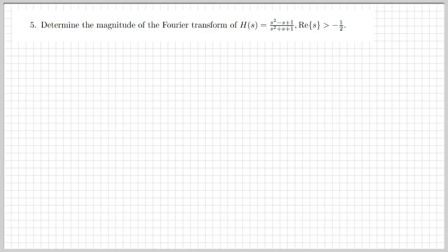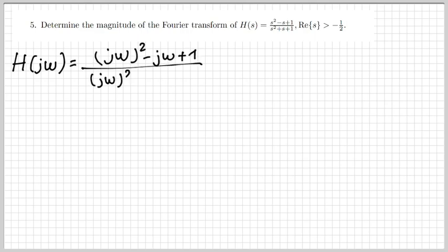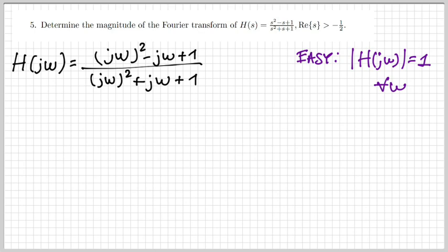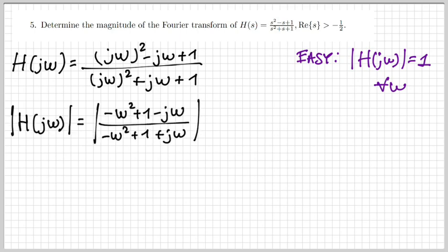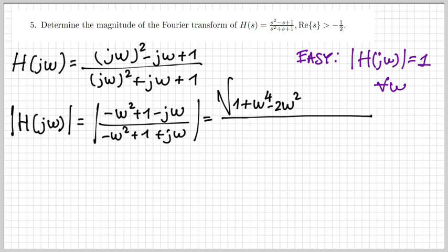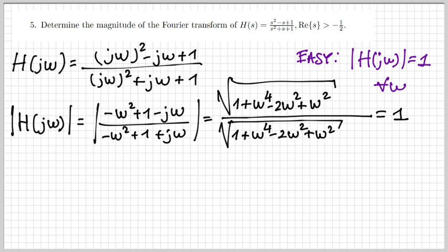Now exercise number five: determine the magnitude of the Fourier transform given H(s). The Fourier transform is obtained by replacing s with j-omega, giving H(j-omega). The numerator and denominator are complex conjugates — same real part, opposite imaginary parts — so they have the same magnitude. The magnitude of the ratio is therefore one for every omega. Explicitly computing: square root of (real part squared plus omega squared) over the same expression confirms the result is one.